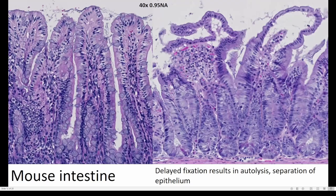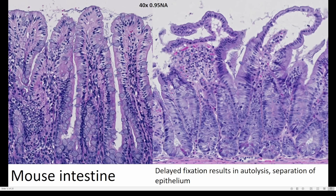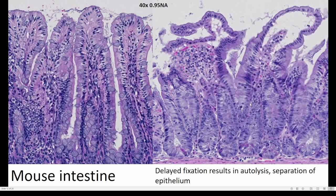Sometimes tissues don't stain with eosin, probably due to massive protein loss. In a mouse intestine example, the left side shows a nice brush border, visible cell membranes, and interesting nuclear structures, whereas on the right, all of these are disrupted. The delay in fixation resulted in autolysis, and the epithelium has separated from the lamina propria.